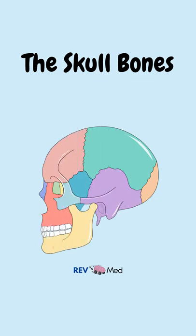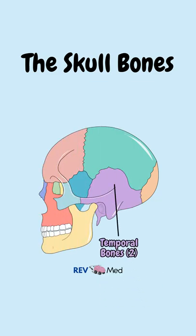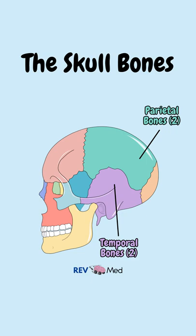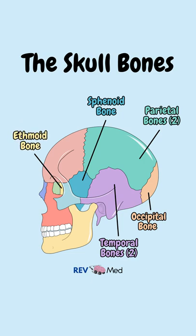The eight bones of the neurocranium are the two temporal bones here in purple, two parietal bones in green, and a single occipital bone in orange, sphenoid in blue, ethmoid in yellow, and a single frontal bone in light red.